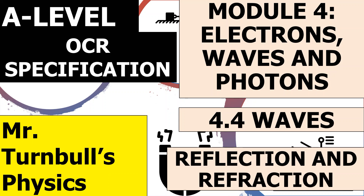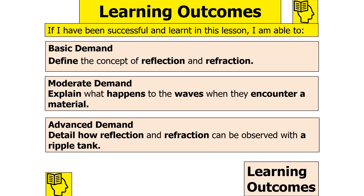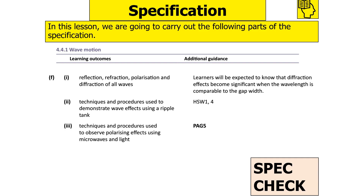Hello and welcome to this video on reflection and refraction, which is part of the waves topic in Module 4 of Electrons, Waves and Photons for OCR A Level Physics. If we've been successful in today's lesson we should be able to define the concept of reflection and refraction, explain what happens to waves when they encounter a material, and detail how reflection and refraction can be observed with the ripple tank. We'll be looking at OCR A Level Physics specification 4.4.1 wave motion.